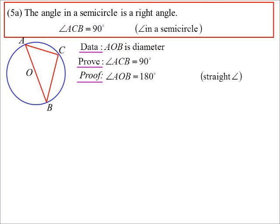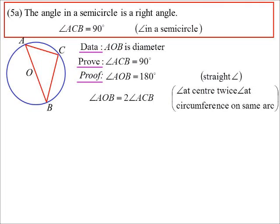So we can say AOB is a straight angle so it's 180 degrees, but the angle at the center is twice the angle at the circumference, so therefore the one at the circumference must be 90 degrees.